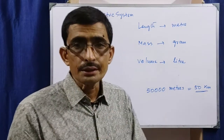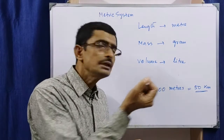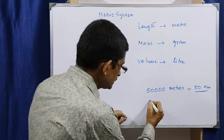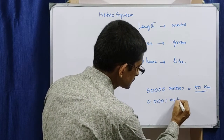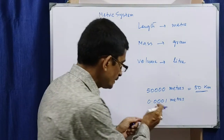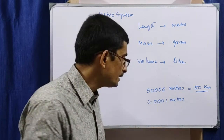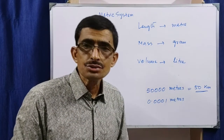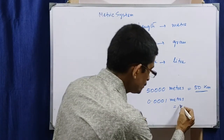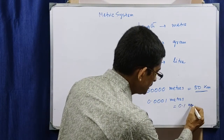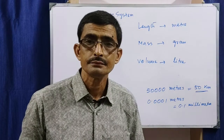Thickness is also a length. Suppose the thickness of the tip of a pen — it is a few millimeters. But if instead you write it as 0.0001 meters, that is a decimal followed by zeros and then some number — again, it is a tedious job. Instead, if you write 0.1 millimeter, it is quite easy to remember.